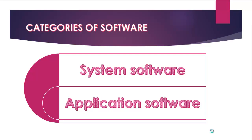The application software enables the system software to function properly. Both application and system software are written using a variety of programming languages, including Java, Python, C++, and many others. When installed into a system — whether a computer, mobile device, or server — the purpose of this software is to automate tasks, process data, and perform complex computations efficiently.